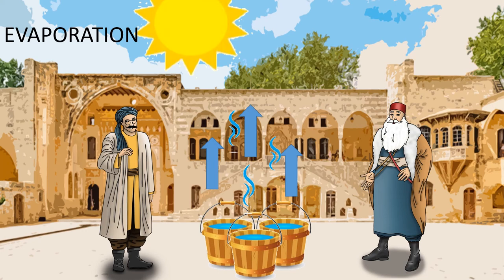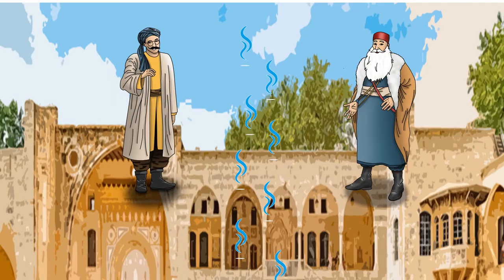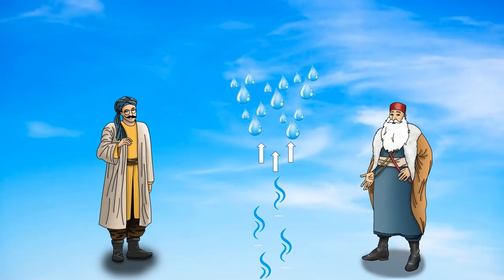But where did the water go? Good question. After the water becomes water vapor, it goes up in the sky. It's very cold there. Once the water vapor reaches the sky, it transforms into tiny water droplets.